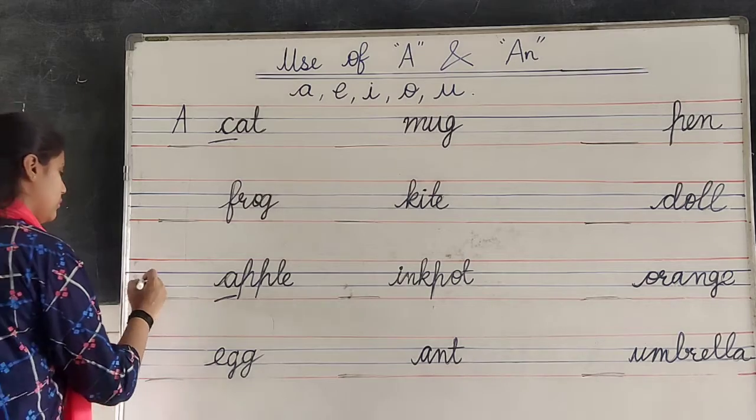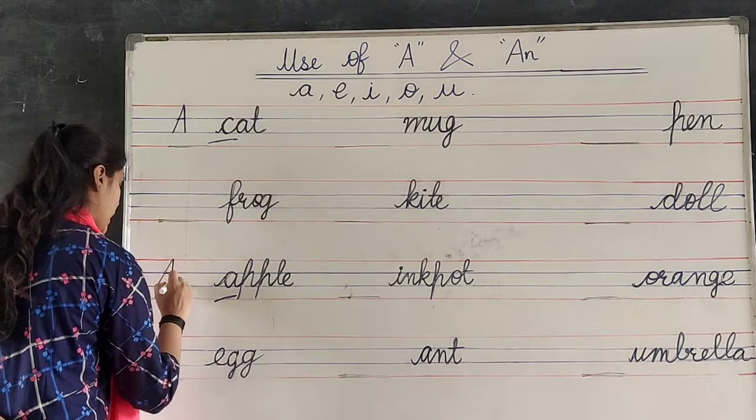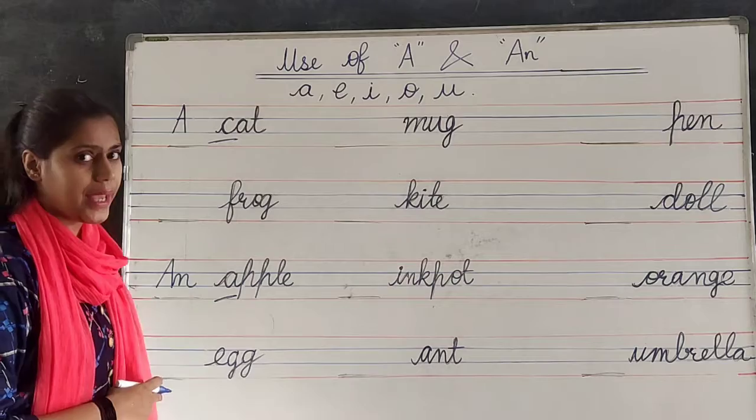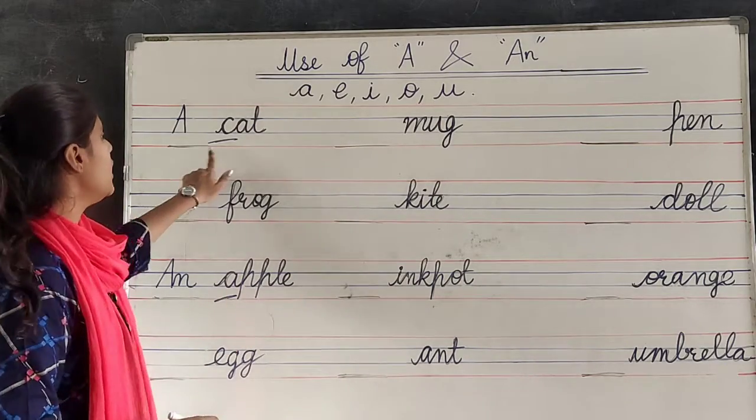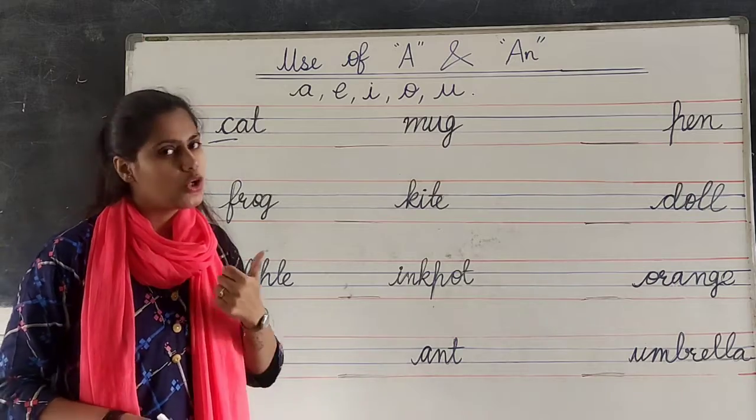So, we can write A, N. An. Okay? Now, an apple. A cat. You all can understand.